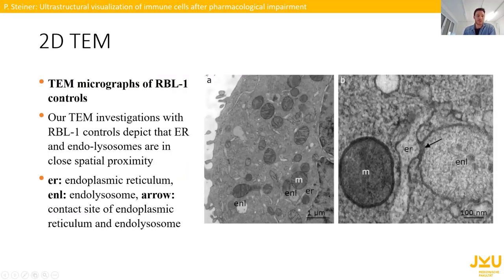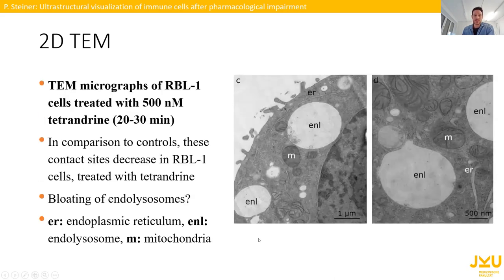This is a very low magnification overview of one cell. In an RBL-1 control, we can observe that there are actually contact points between the endolysosome and the ER. If we treat our cells with the plant alkaloid tetrandrine, these interaction or contact points between the endolysosome and ER are no longer visible in our two-dimensional data. This is very surprising for us. Also, the endolysosomes appear bloated in our tetrandrine-treated cells.